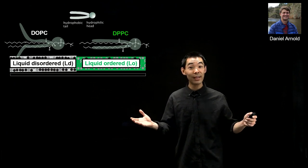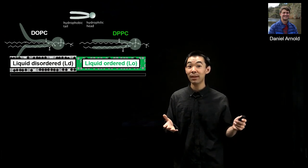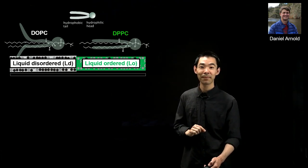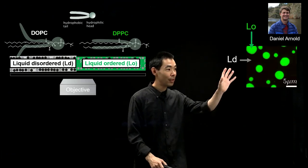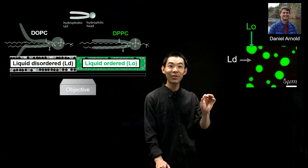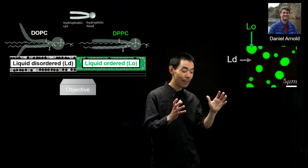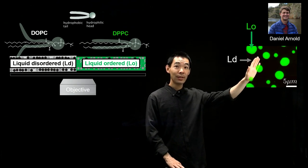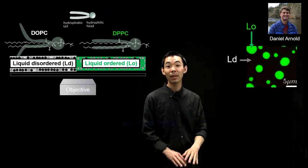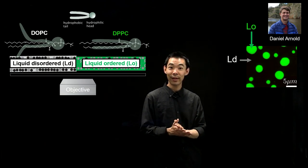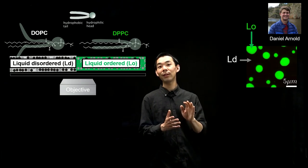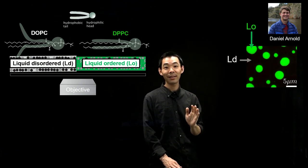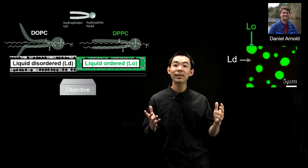They macroscopically phase separate just like any classical phase separation in 3D — like oil and water — except this is happening along a thin 4-nanometer interface. When we image from the bottom, we've added a green fluorophore that enriches in the LO phase, which appears circular and green. The background liquid disordered phase appears dark because we didn't add any fluorophores there. There is a lipid bilayer across this entire field of view; we are only visualizing the LO domain.